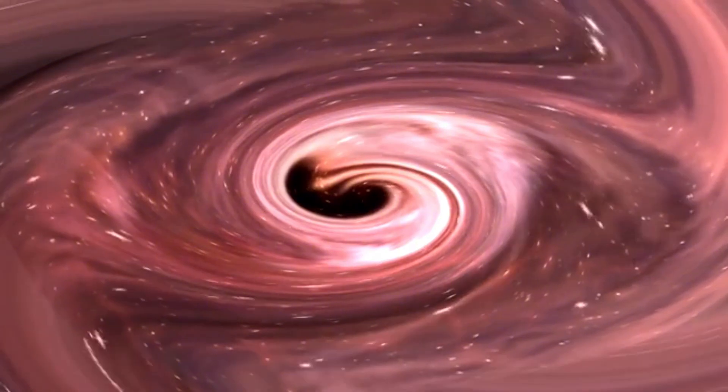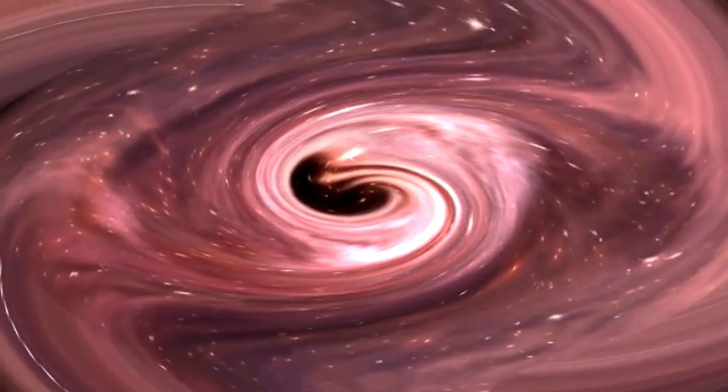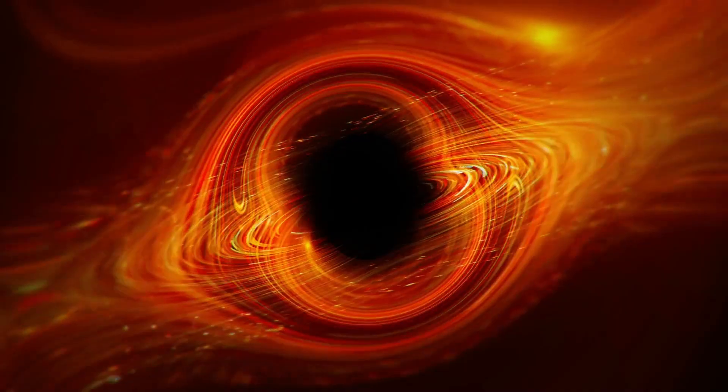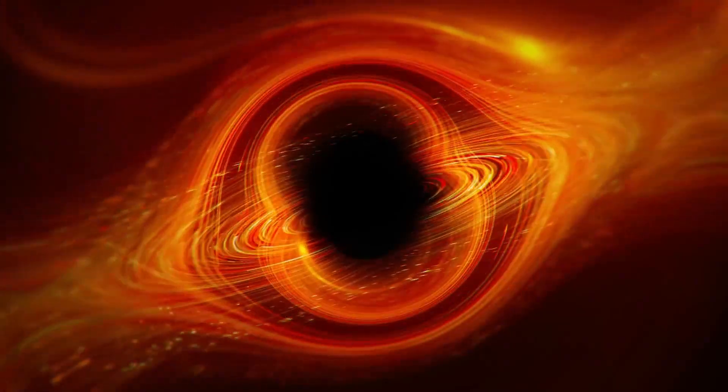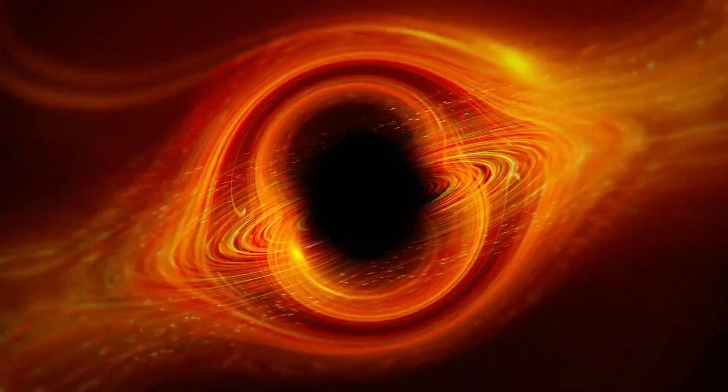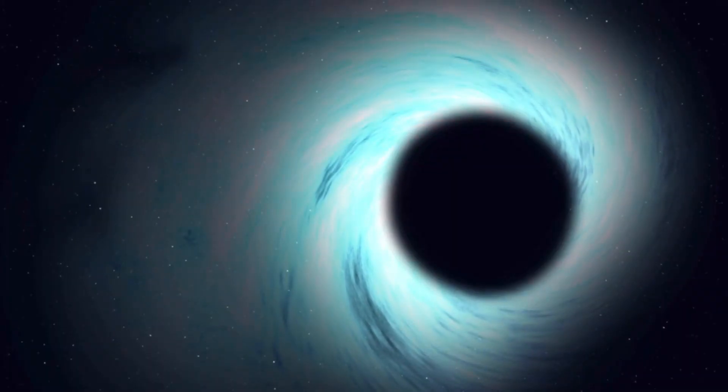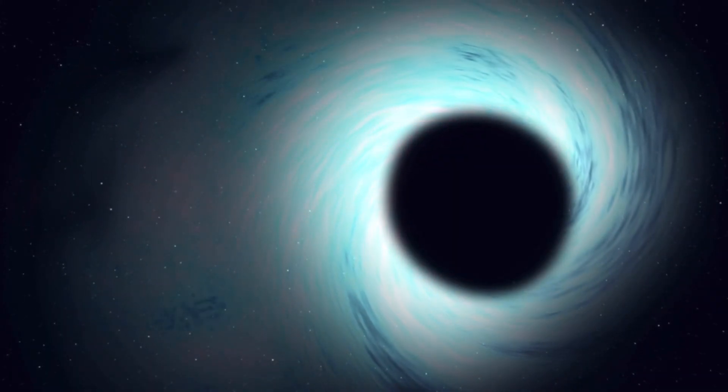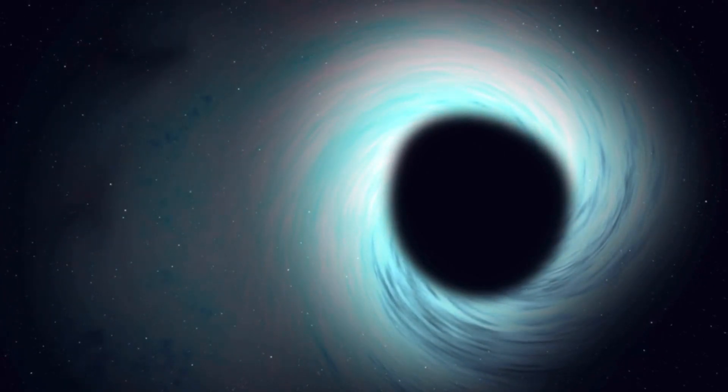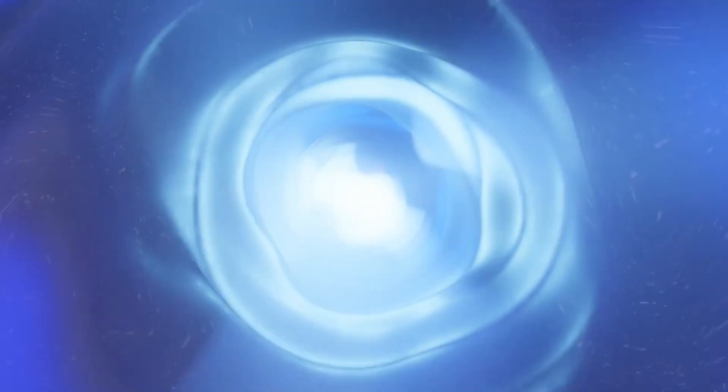Scientists have been fascinated by black holes for centuries, ever since they pondered objects in space so massive and dense that they could trap light. The most famous ideas about black holes were predicted by Einstein's theory of general relativity. Essentially, when a massive star dies, it leaves behind a tiny dense core. If this core's mass is more than three times that of the sun, gravity overwhelms everything else, leading to the formation of a black hole.